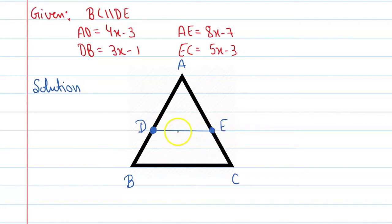Okay, so DE is parallel to BC. This is given in the question. And we know the values of these segments - AD, DB, AE, and EC. We need to find the value of x. So let's start.